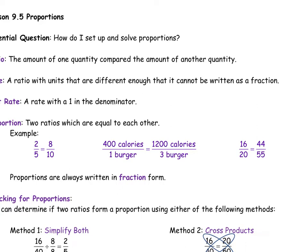A proportion is two ratios which are equal to one another. So proportion means they're equal. An example is two-fifths and eight-tenths. Well, they don't look equal, right?